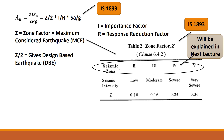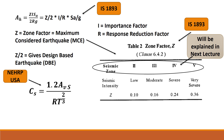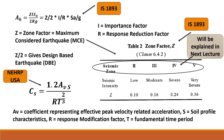Before we discuss this further, the US building codes give the factor Cs as the acceleration coefficient: Cs = (1.2 × Av × S) / (R × T^(2/3)). Here, Av is the coefficient representing effective peak velocity-related acceleration, S is the soil profile characteristic, R is the response modification factor, and T is the fundamental time period of the structure.